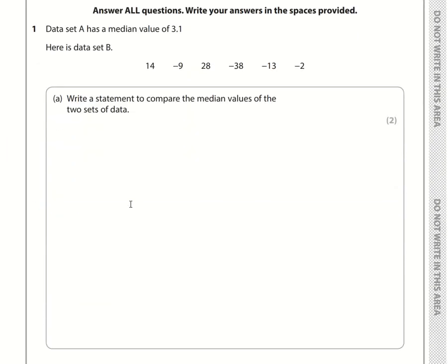Let's take a look at question number 1. Write a statement to compare the median values of the two sets of data. Data set A has a median of 3.1. What is the median of data set B? We need to put these values in ascending order: minus 38, minus 13, minus 9, minus 2, 14, and 28.